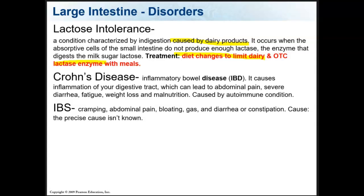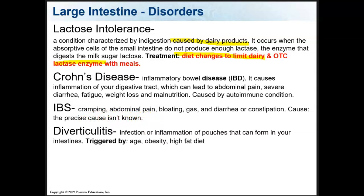IBS, or irritable bowel syndrome, involves cramping abdominal pain, bloating, gas, diarrhea, or constipation. The cause of IBS is not known — it's probably many things. Diverticulitis is infection or inflammation of pouches that can form in your intestines. It is triggered by age — the older you get, the higher your chance of diverticulitis — and also by obesity and a high-fat diet.